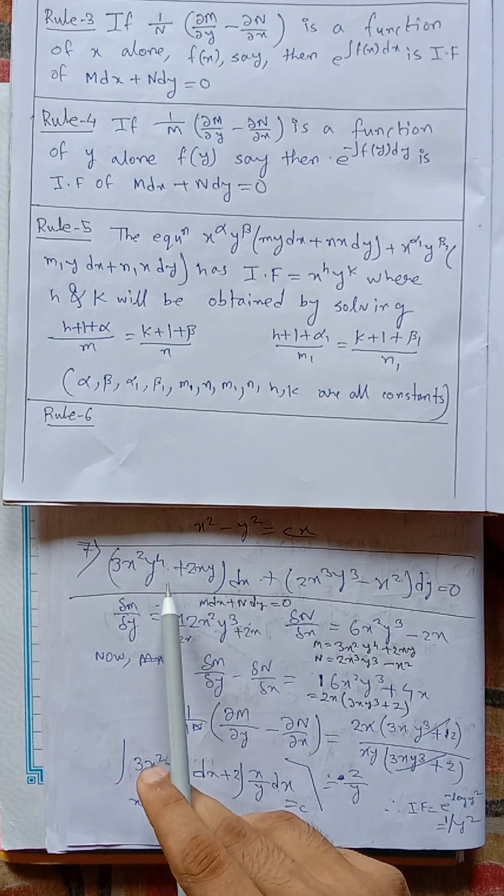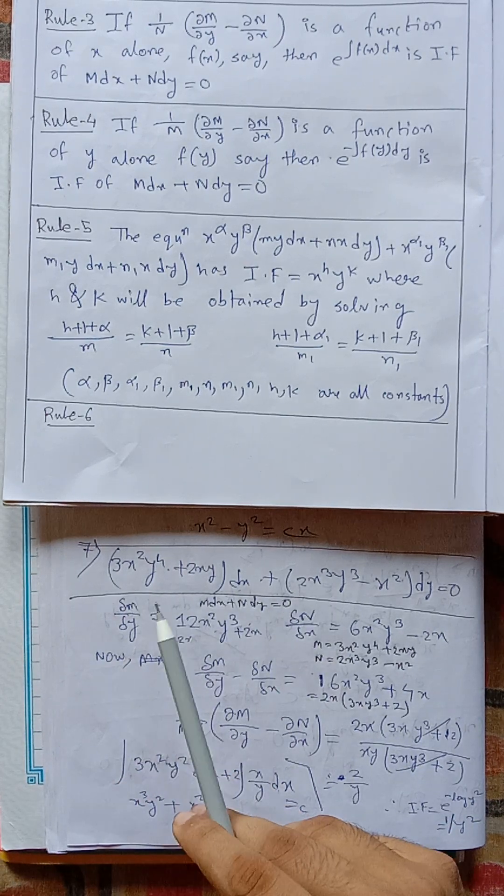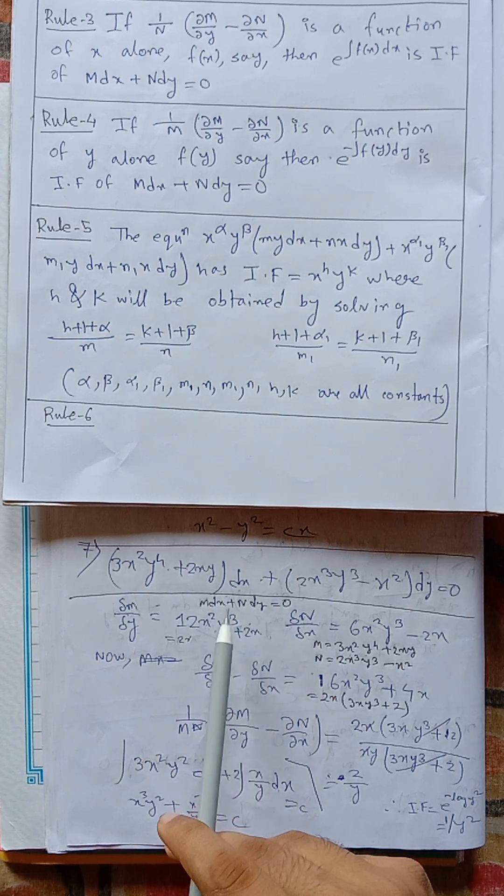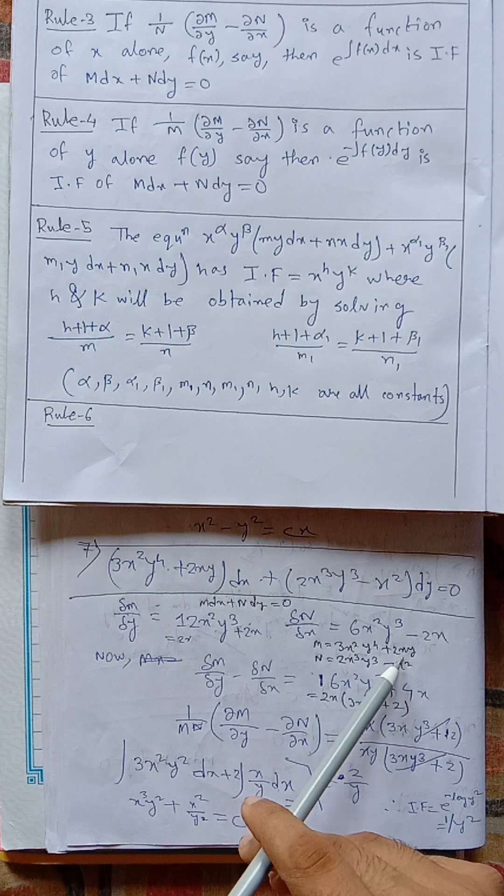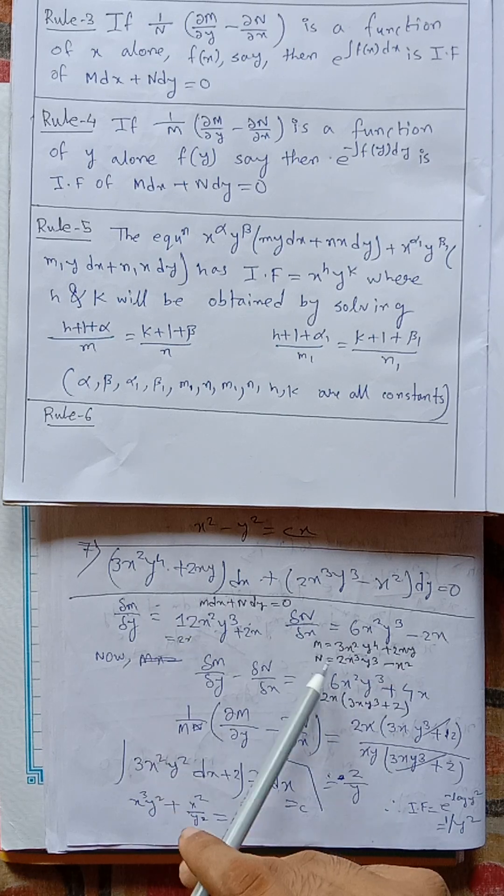At first we have to compare this equation with mdx plus ndy. And after comparing, we get m equals to 3x square y to the power 4 plus 2xy and n equals to this.